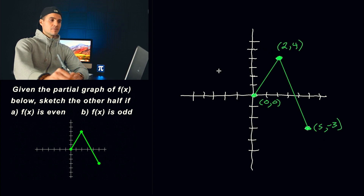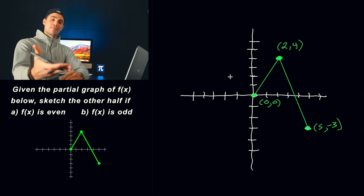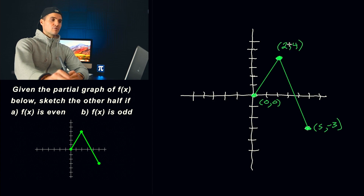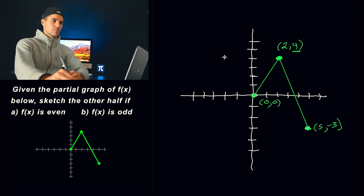We're going to be reflecting them over the y-axis. If we reflect them on the y-axis, we'll end up with a symmetrical function and the function is going to be even. Whenever we take a point and reflect it over the y-axis, the y value stays the same. So the point (2, 4) — the y value is still going to be 4, but the sign of the x value changes. So 2 becomes negative 2, and we get the point (negative 2, 4).